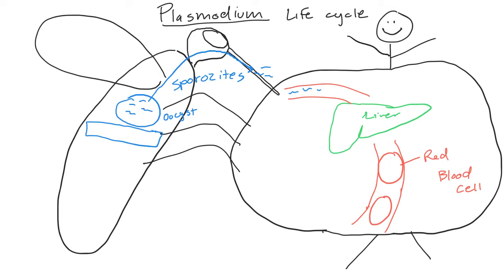The mosquito drinks the blood of a person, and now the sporozoites are in the blood. The sporozoites then go into the liver and mature into what are called merozoites. The merozoites can then go back into the blood and infect red blood cells. Within these red blood cells they can multiply through asexual reproduction, burst out, and infect another red blood cell. The merozoites are what cause the symptoms of malaria — fever and chills as they burst red blood cells.